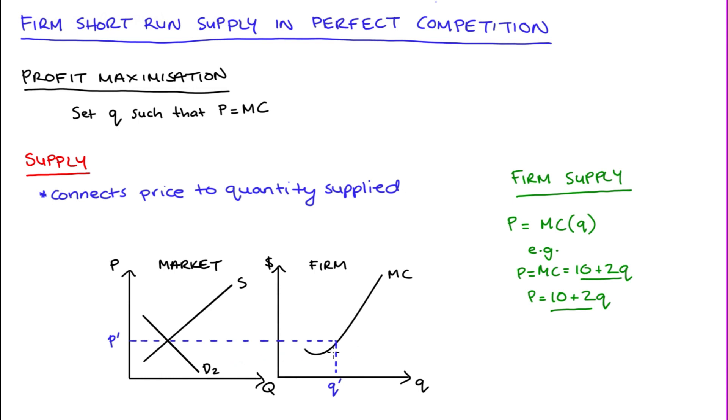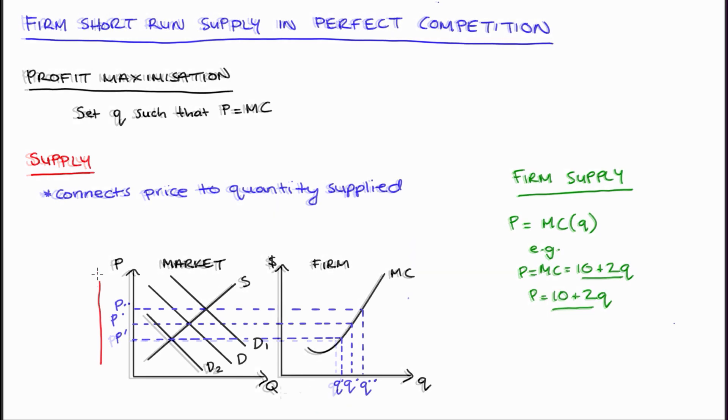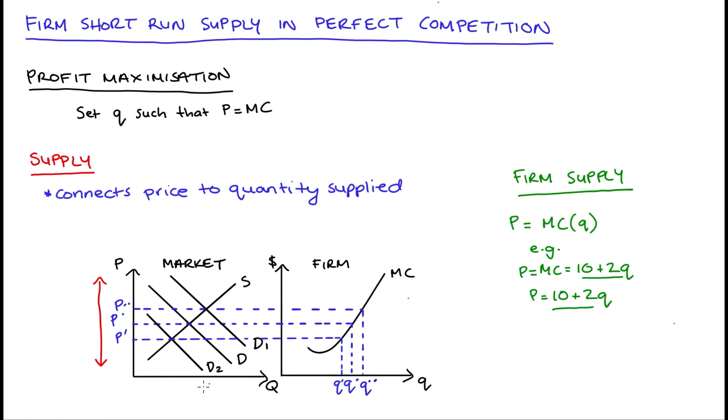So if we thought about all of the possible prices that the market could produce, the firm would take those prices and maximize profit by setting their quantity such that price is equal to marginal cost.